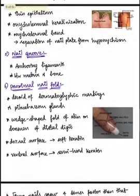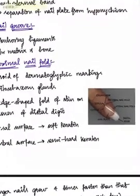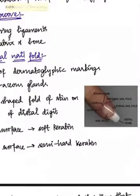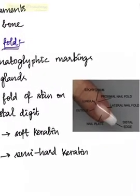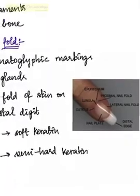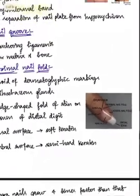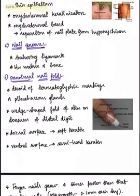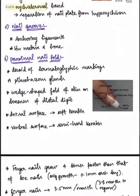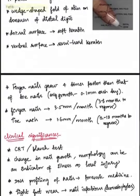The proximal nail fold is a wedge-shaped fold of skin on the dorsum of the distal digit. This area is devoid of dermatoglyphic markings and pilosebaceous units. It contains two parts: a dorsal surface containing soft keratin and a ventral surface containing semi-hard keratin.